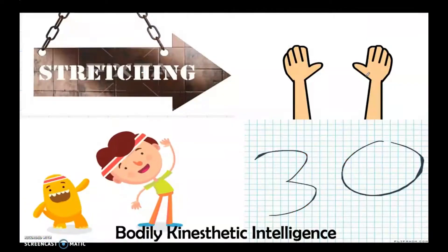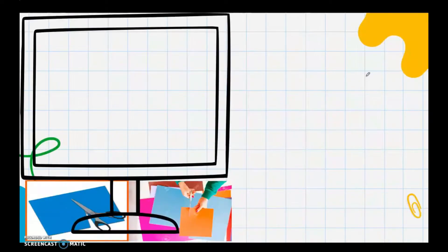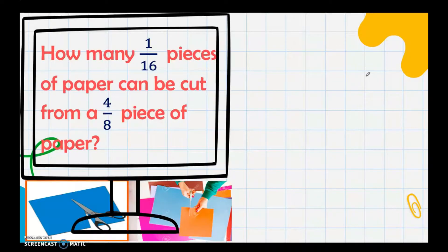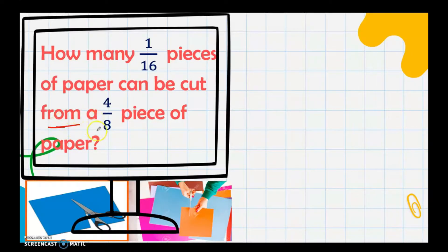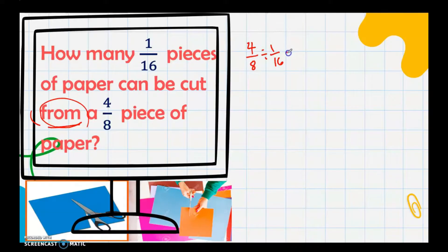Let's have more examples. How many 1/16 pieces of paper can be cut from a 4/8 piece of paper? In this problem, the dividend is the total, which is 4/8 pieces of paper. The word 'from' tells us that 4/8 is the dividend. We divide by 1/16.